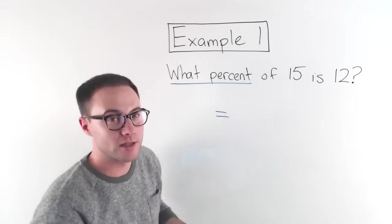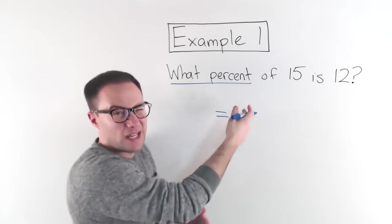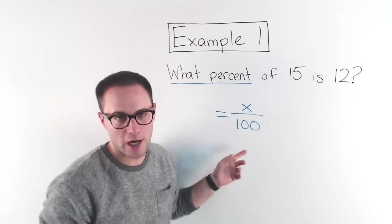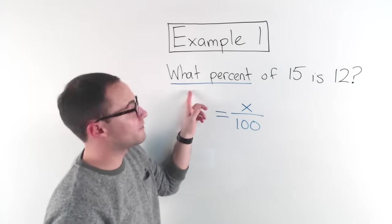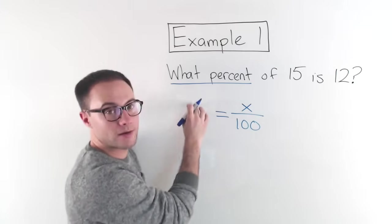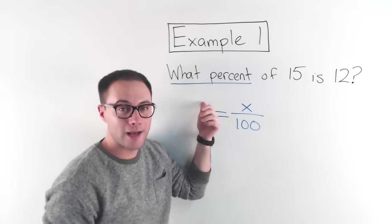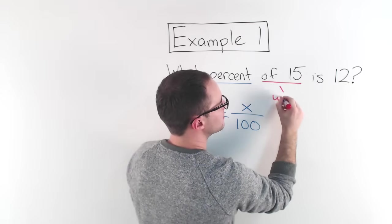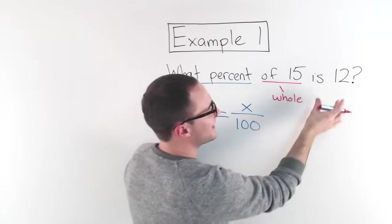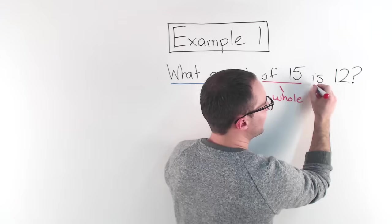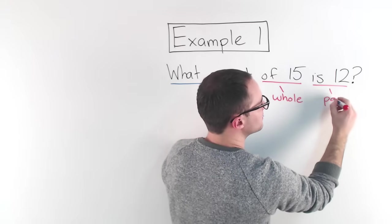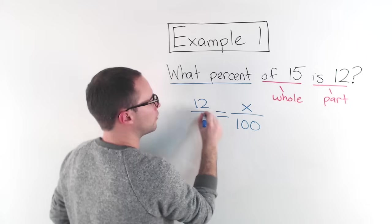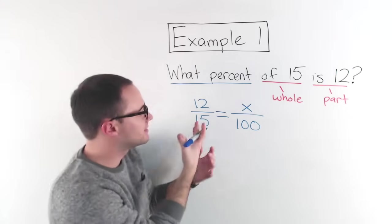So when we're setting up our proportion, I'm going to put a variable. You could put a P for percent if you want or just an X over 100. You know the percent is always going to be over 100, right? So that's what we don't know. That's what we're trying to find. What percent? Now we've got to figure out, well, what do we put here? We have a part and a whole. When you see this of, of 15, that represents the whole. Okay. Is, is is the other key word. When you see that is, is 12, that represents the part. So on my other side of my proportion, I'm going to put 12 over 15.